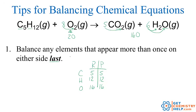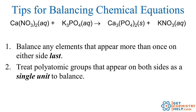So that's the first tip: if you see an element that appears in more than one place on either the products or the reactant side, balance that element last. Now tip number two says to treat polyatomic groups that appear on both sides as a single unit to balance. A polyatomic group is a group made up of more than one atom — those are things like sulfate, nitrate, phosphate, hydroxide. So if you see the same polyatomic group on both sides of an equation, balance that polyatomic group as a single unit. Let me show you an example.